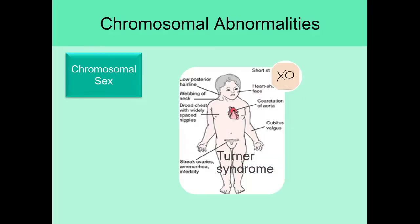Turner syndrome is a disorder where there is one X chromosome and nothing else — called XO. So instead of having extra chromosomes, there's only one X and nothing else at this pair. It turns out that many miscarriages are attributable to Turner syndrome because this disorder can cause really significant malformations that are inconsistent with life, resulting in miscarriage or stillbirth. If the person actually survives, they oftentimes will have very characteristic features on their face.